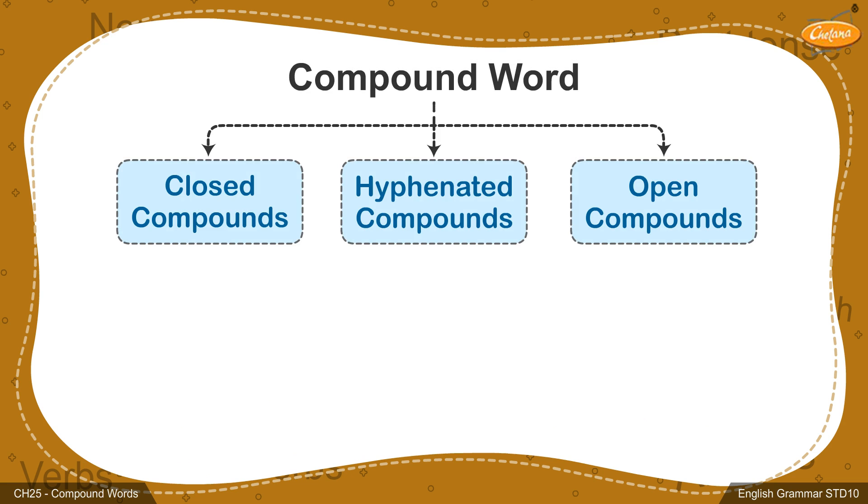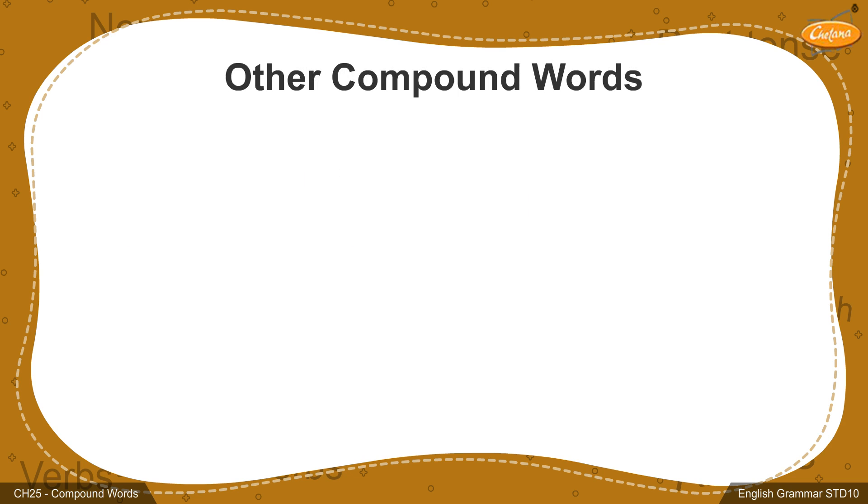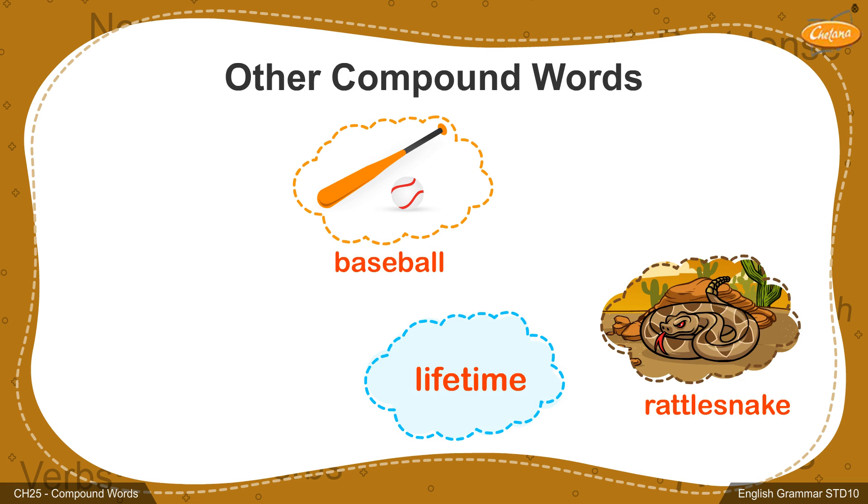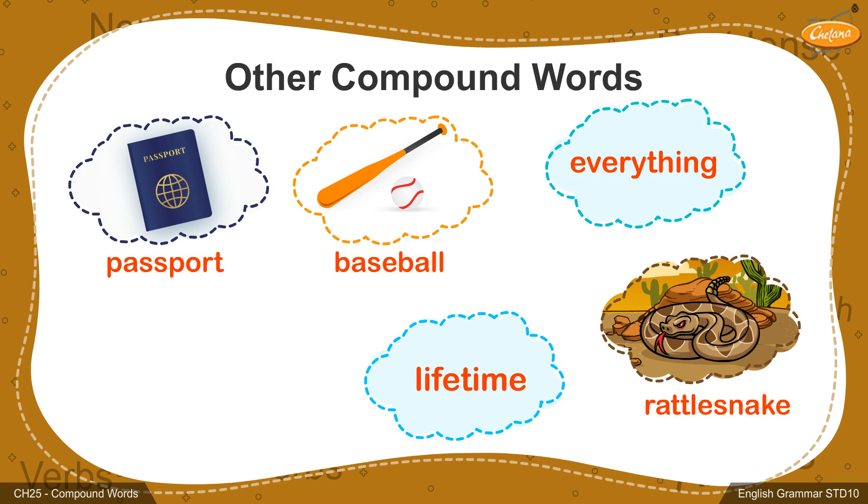Now that we have understood the three types of compound words, let's have a look at other compound words. For example, lifetime, baseball, rattlesnake, passport, everything, teapot.